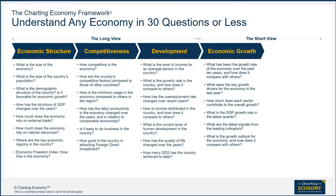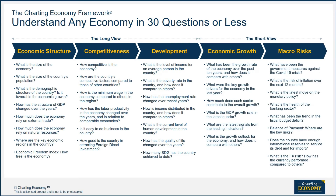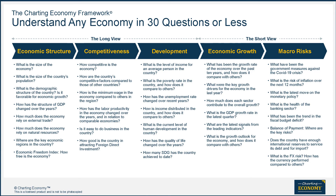As spectators, we ask questions about these issues and only pick relevant indicators that help answer them. Our framework gives you both long and short views. Only relevant questions are grouped into five categories: Economic Structure, Competitiveness, Development, Growth, and Macro Risks.